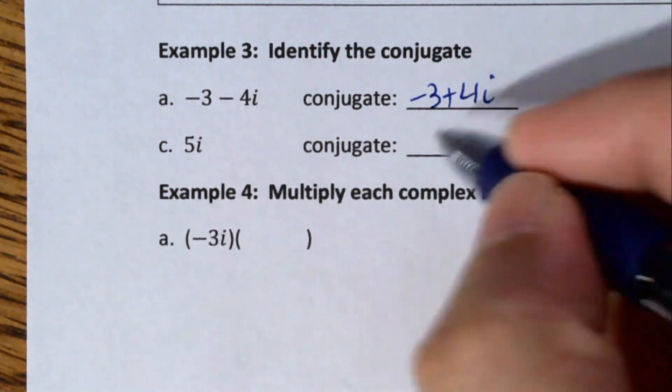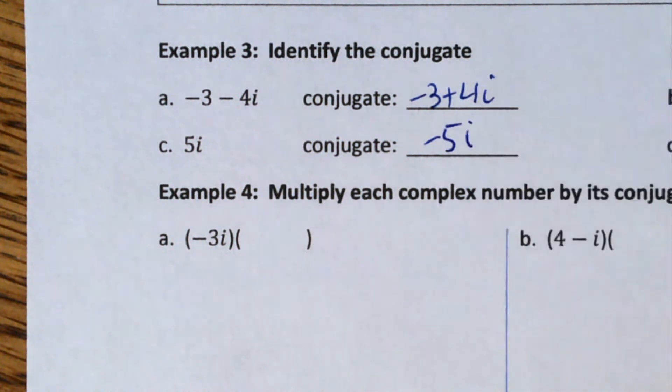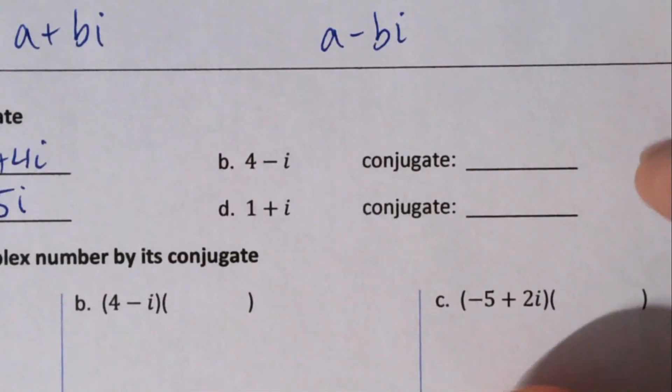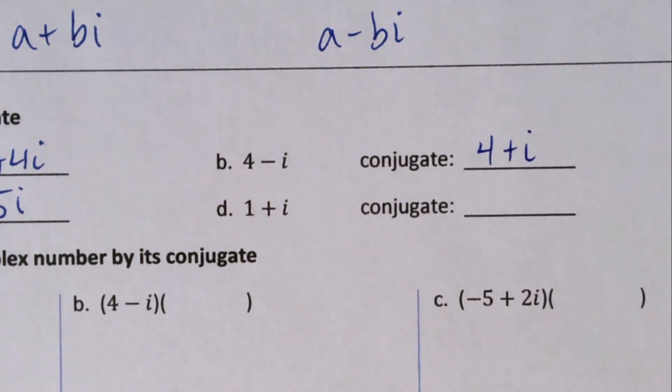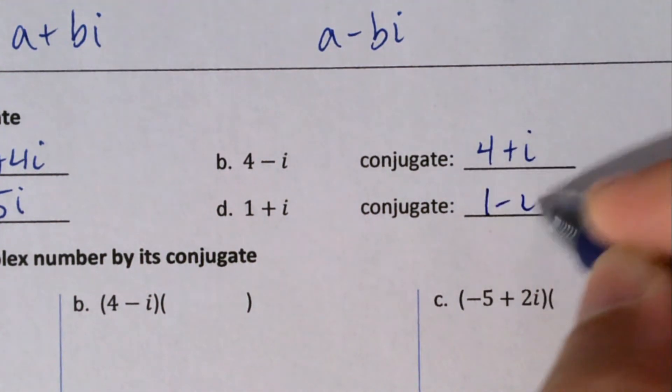5i, that is imaginary, so we're going to change it to -5i. That's our conjugate. We have 4 - i, so the conjugate is 4 + i. 1 + i, the conjugate is 1 - i. All you're doing is changing the sign of the imaginary part.